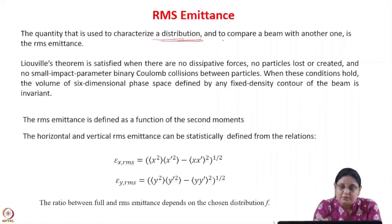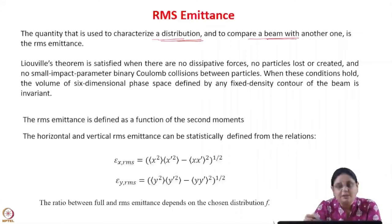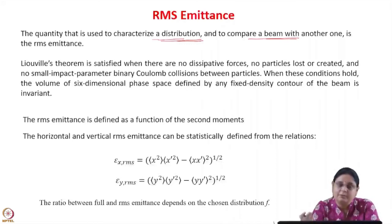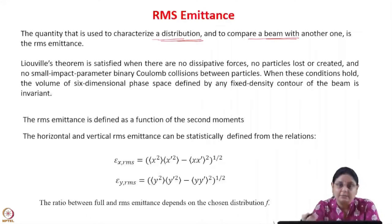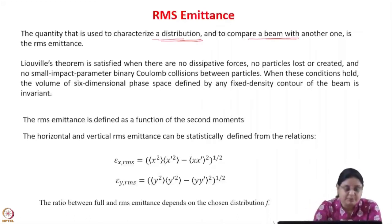The RMS emittance is a quantity that can be used to compare one beam with another beam. One beam could be a uniform distribution and another beam could be a Gaussian distribution.